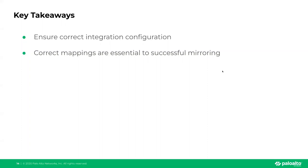Key takeaways: ensuring correct integration configurations from the start is where most people run into issues. Correct mappings are essential for successful mirroring — if mappings aren't set, even with custom fields, the data might not transfer correctly. ServiceNow permissions can be finicky, so make sure you follow the docs and assign the correct permissions to the role used for the integration instance. Incorrect permissions can affect mirroring of notes, comments, and attachments.